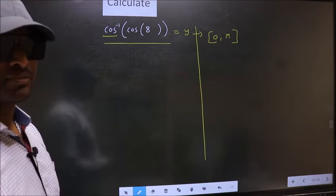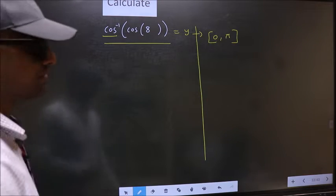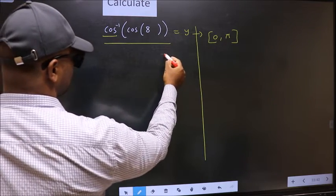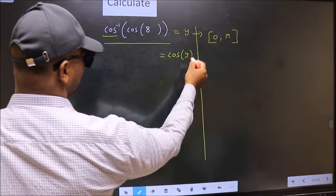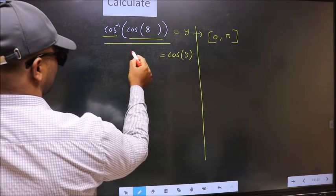Clear with this point? Next. Shift cos inverse to the other side. It will become cos y. And this no change.